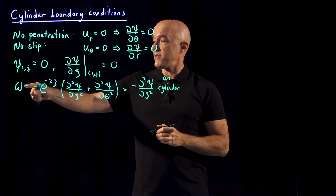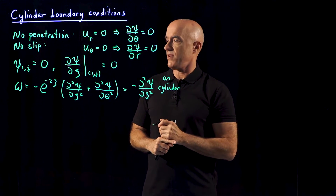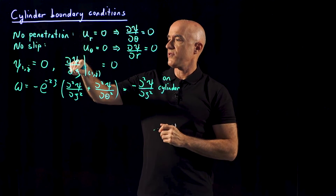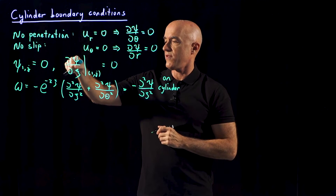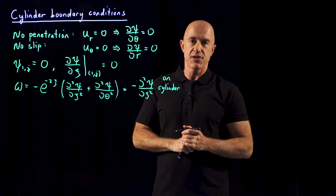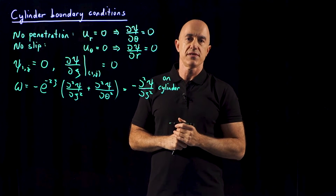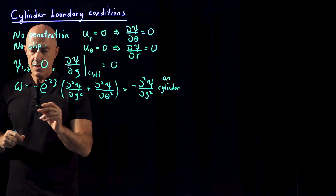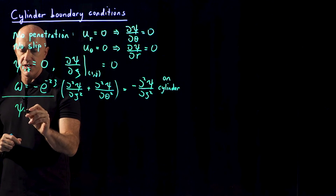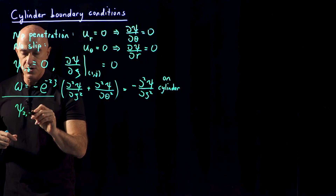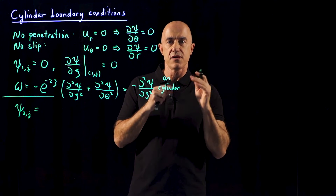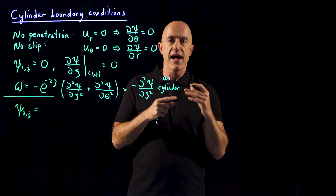The problem here is that this relates the vorticity to the second derivative of the stream function, but our boundary condition is on the first derivative. So in order to convert the boundary condition on the first derivative to a boundary condition on the vorticity, we need to make use of the Taylor series expansion. We need to do two Taylor series expansions: the first expanding the stream function one grid point away from the cylinder, around its value on the cylinder.